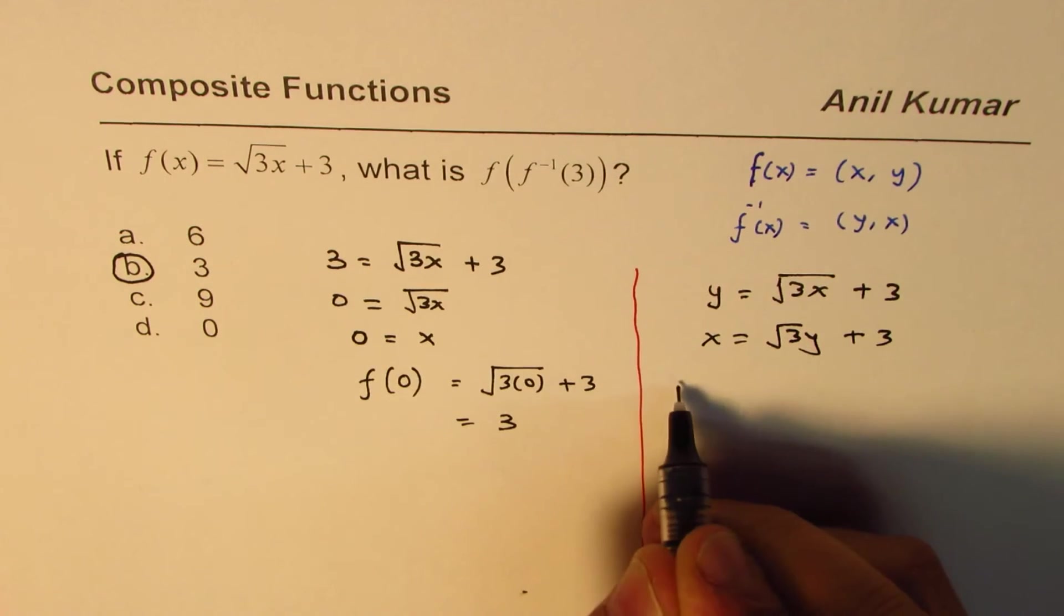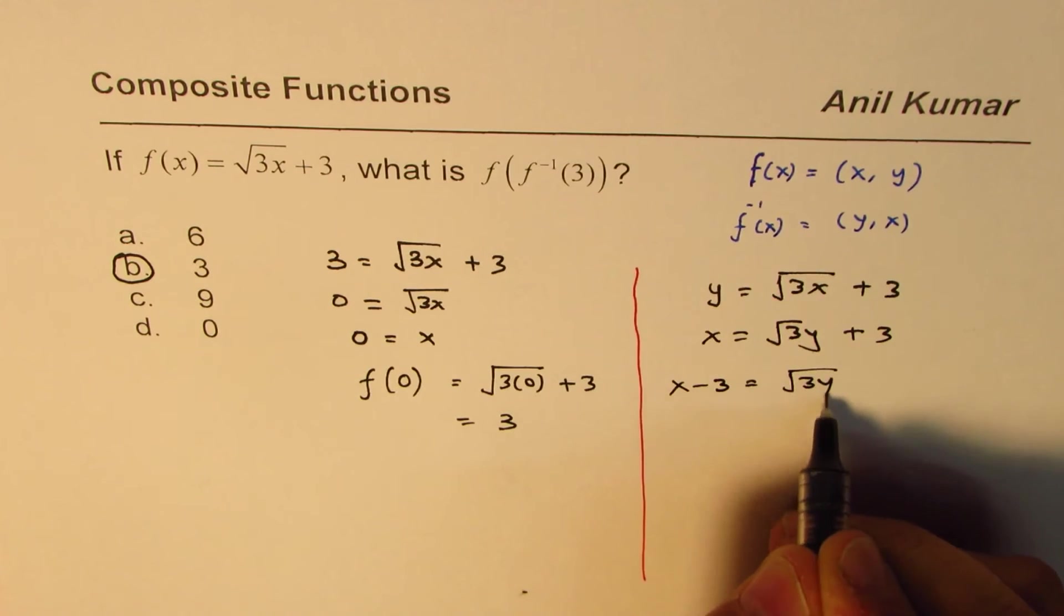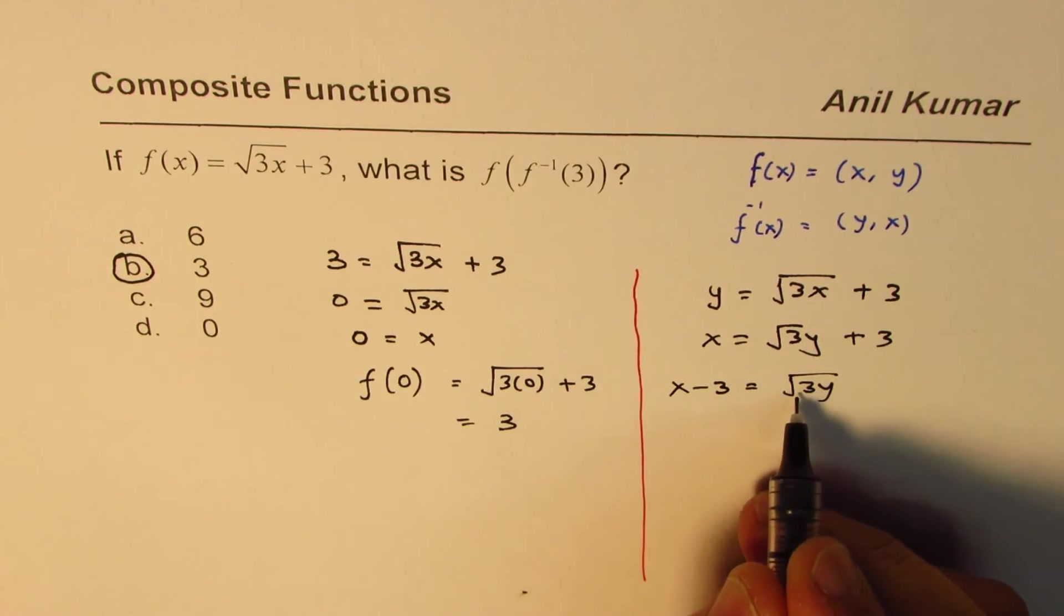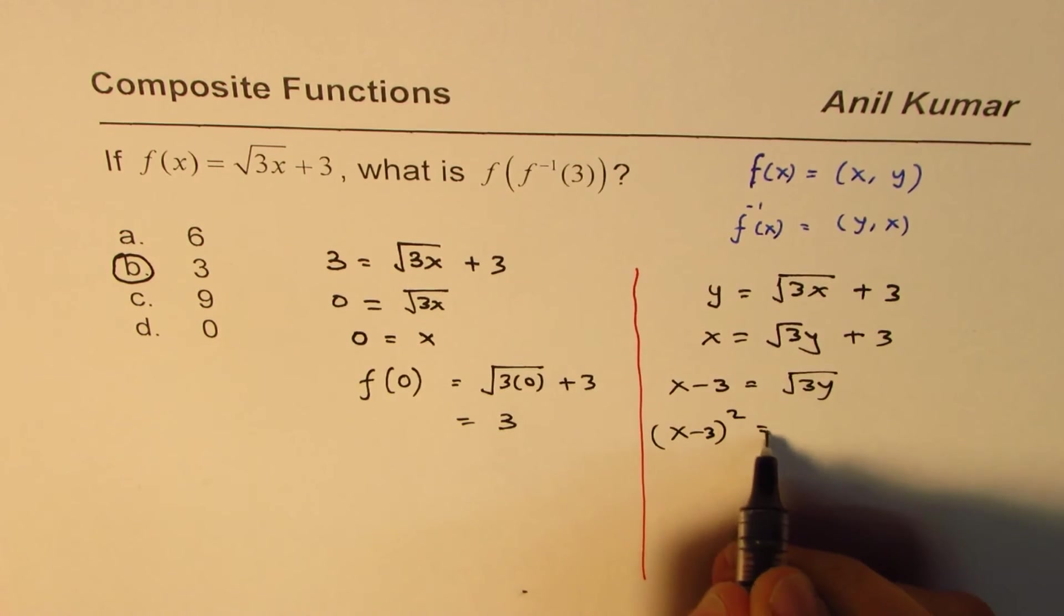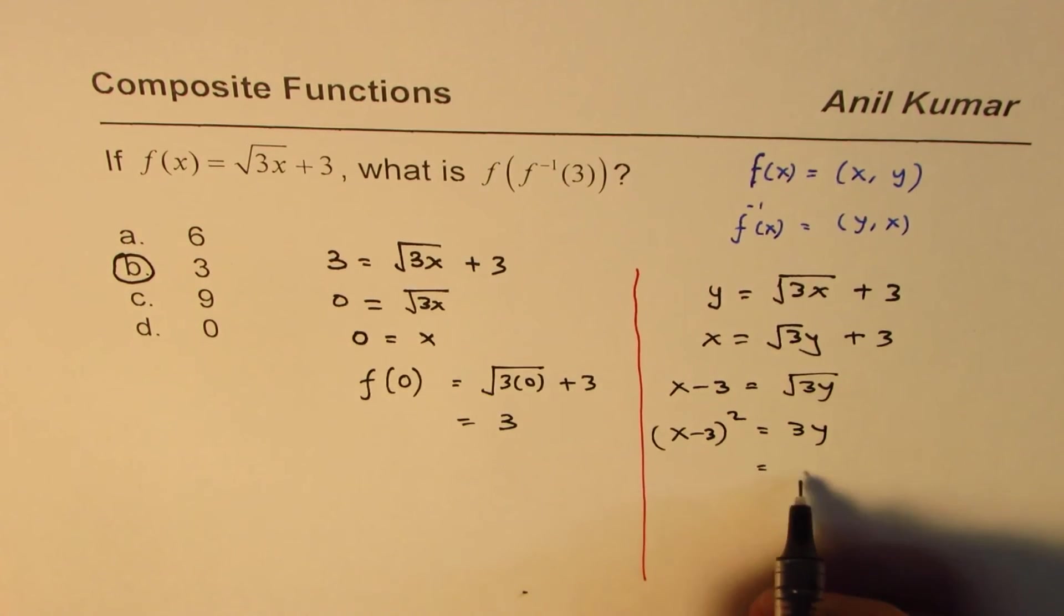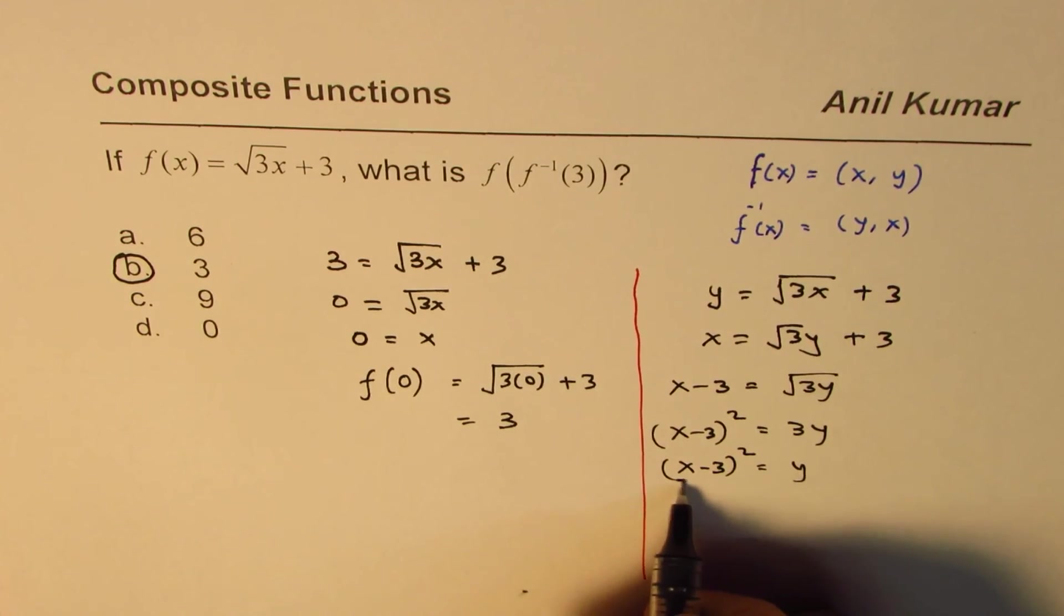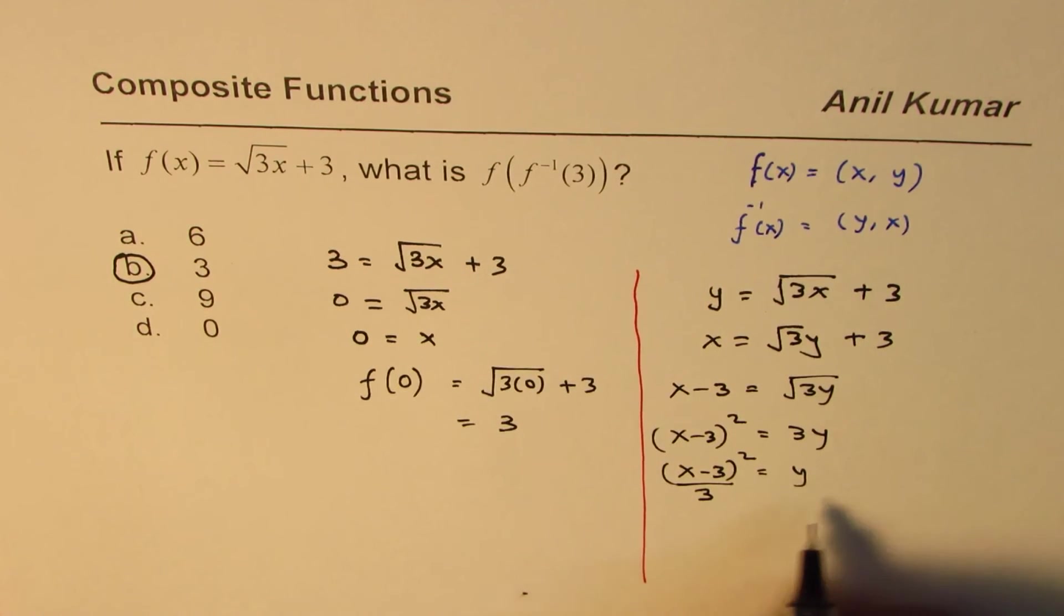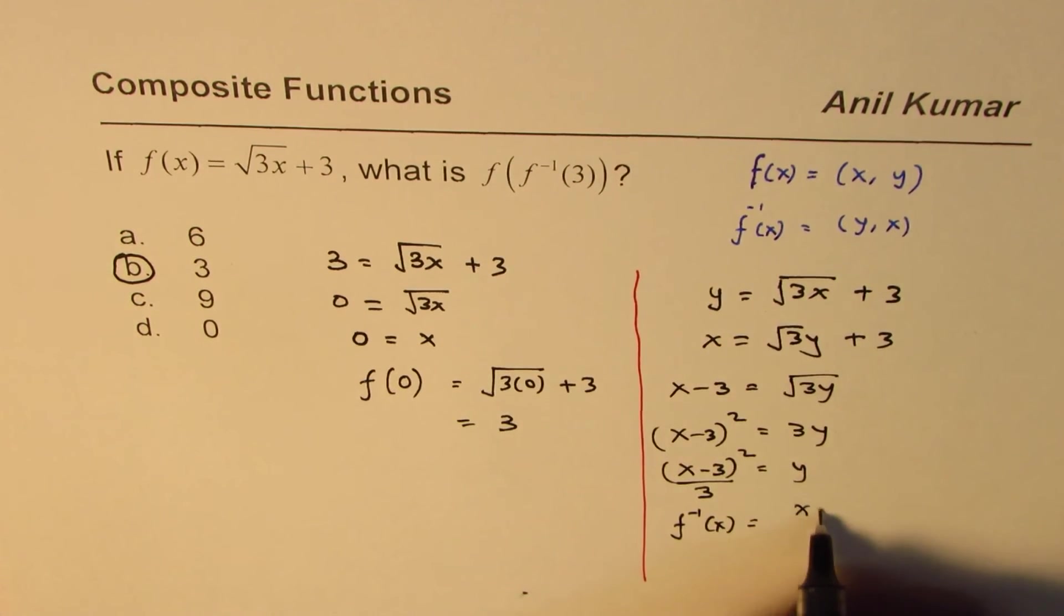Now solve for y. We have x minus 3 equals square root of 3y, and then we need to square it to get y. (x minus 3) squared equals 3y, or y equals (x minus 3) squared divided by 3. So that becomes the f inverse. f inverse of x is actually equal to (x minus 3) squared divided by 3.